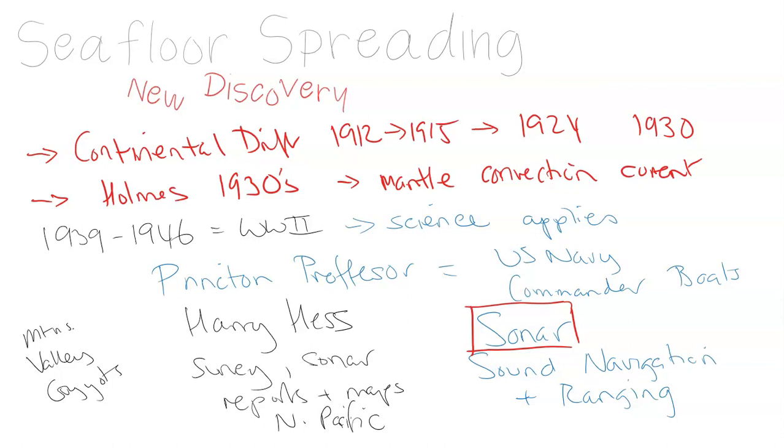This was a new way of locating things in the ocean. Fast forward to 1962: Hess is mapping the North Atlantic Ocean and he discovered in the middle of the ocean a large underwater mountain range.